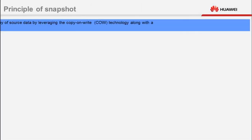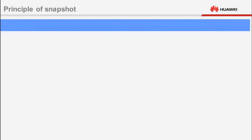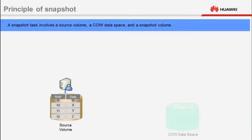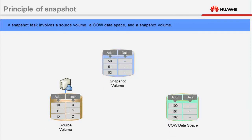The snapshot obtains a point-in-time copy of source data by leveraging the copy-on-write, or COW, technology along with a mapping table. A snapshot task involves a source volume, a COW data space, and a snapshot volume. The source volume stores the source data for which snapshots are generated and is represented as a LUN to users.